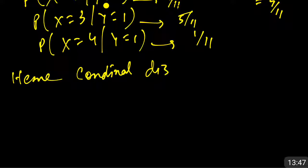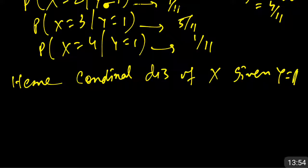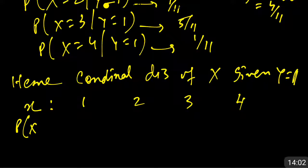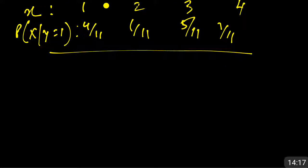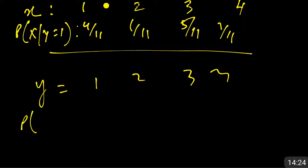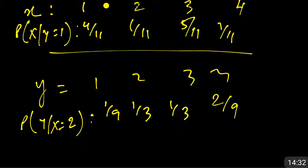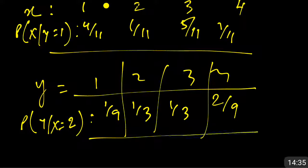The conditional distribution of X given Y=1 is written as a table: X takes values 1, 2, 3, 4 and P(X|Y=1) takes values 4/11, 1/11, 5/11, 1/11. Similarly for Y given X=2: Y takes values 1, 2, 3, 4 and P(Y|X=2) = 1/9, 1/3, 1/3, 2/9. This is how to solve a conditional structure from a joint probability distribution problem.